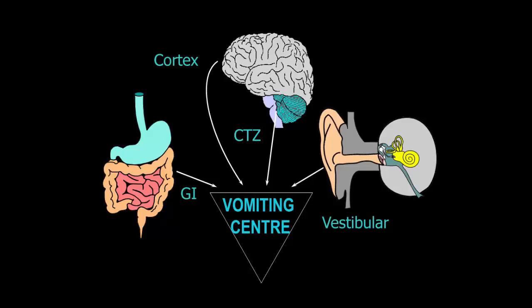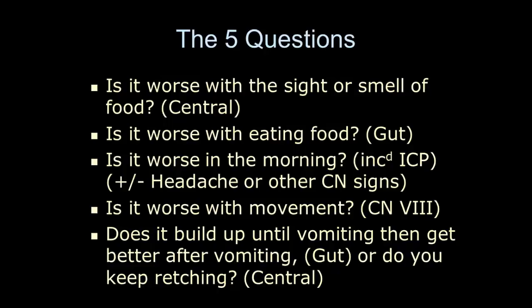There are four different ways to activate the vomiting center: the gut, the cerebral cortex, the chemoreceptor trigger zone, and the vestibular system. There are five diagnostic questions: Is it worse with the sight or smell of food — that's central nausea. Is it worse with eating food — likely gut nausea. Is it worse in the morning with signs of increased intracranial pressure such as headache or cranial nerve signs — that's classically raised ICP. Is it worse with movement — likely cranial nerve eight. And does it build up until you vomit and then improve — likely gut — or do you keep retching and vomiting with nothing left, which is central nausea.